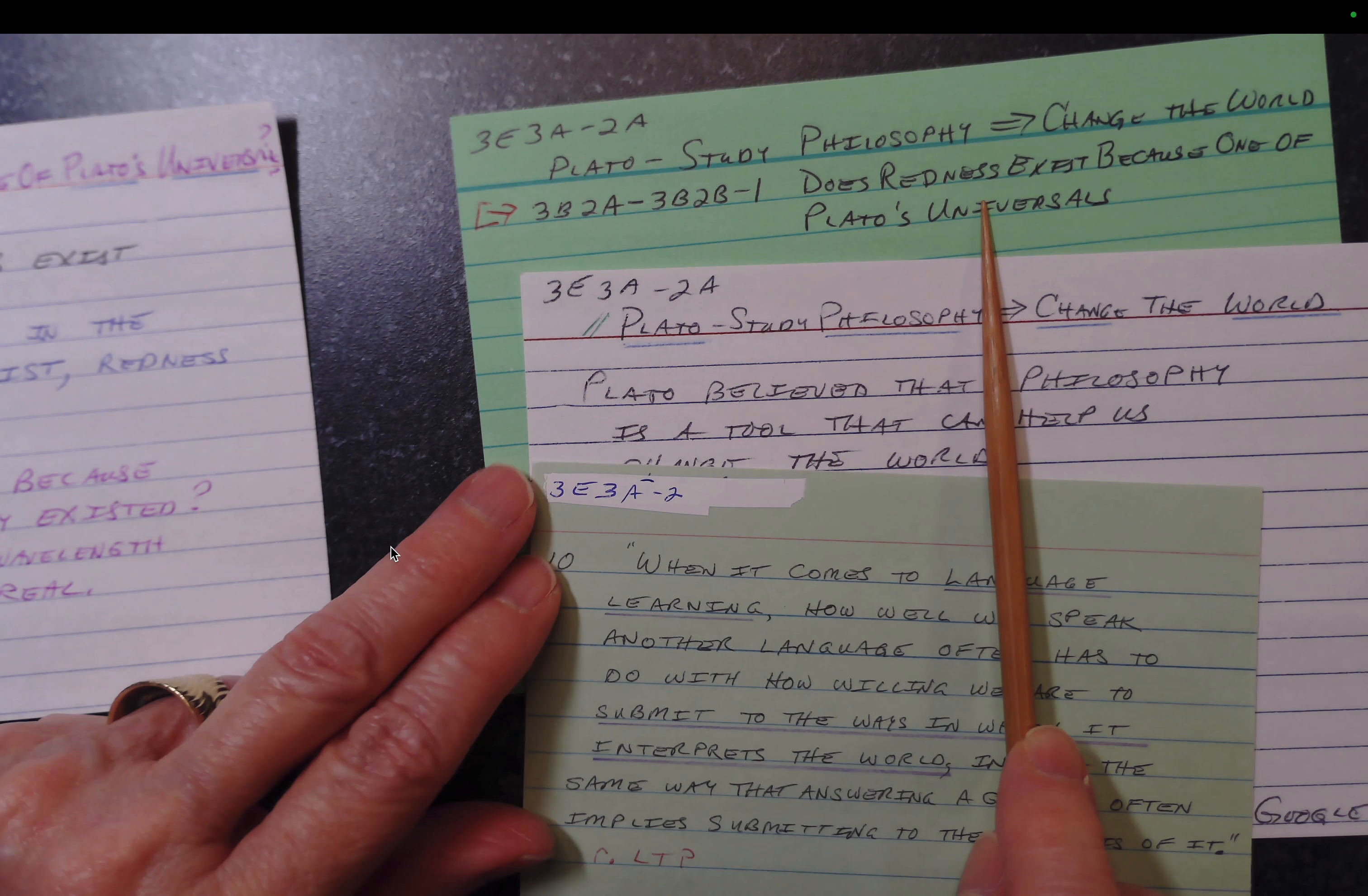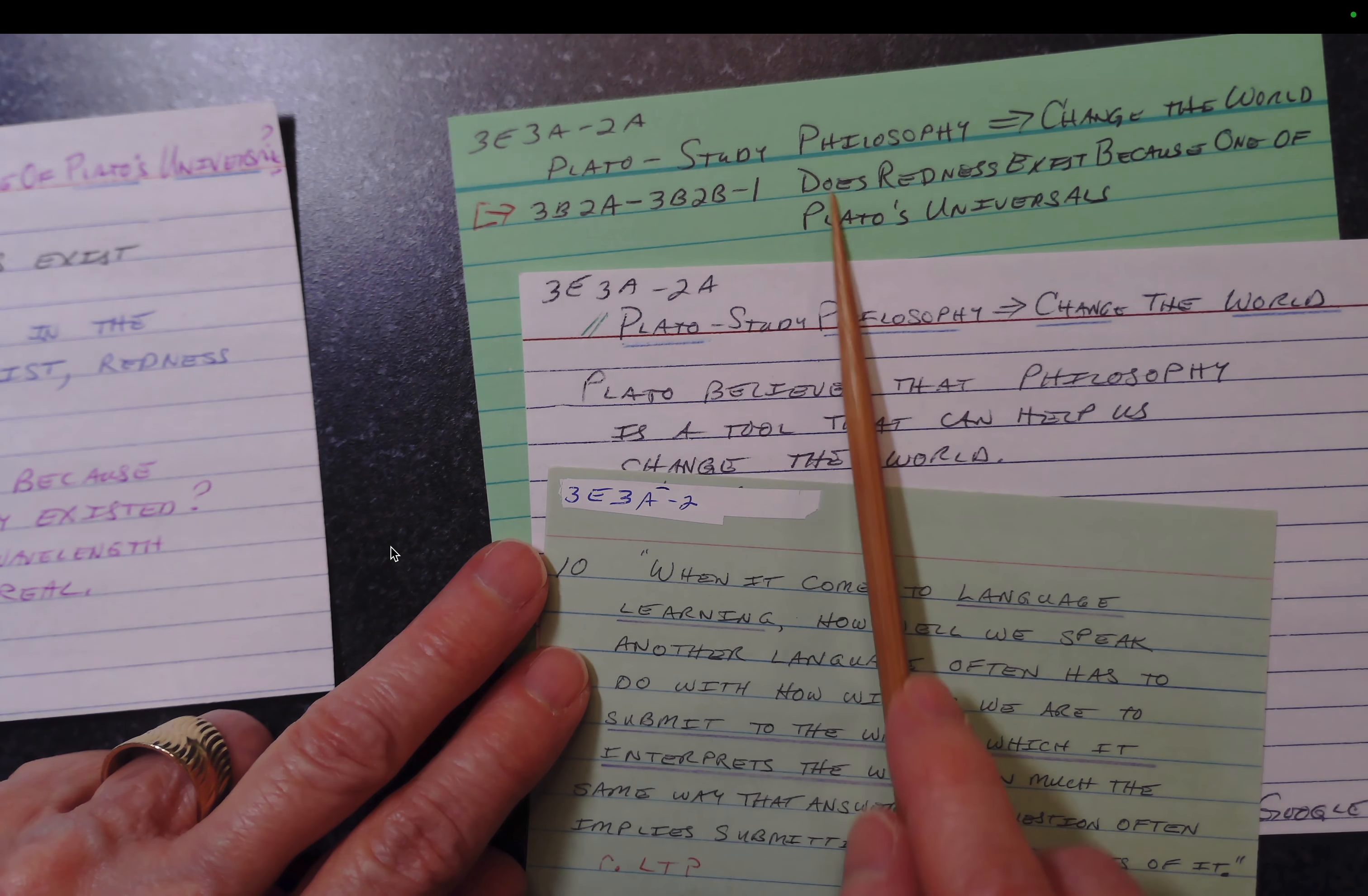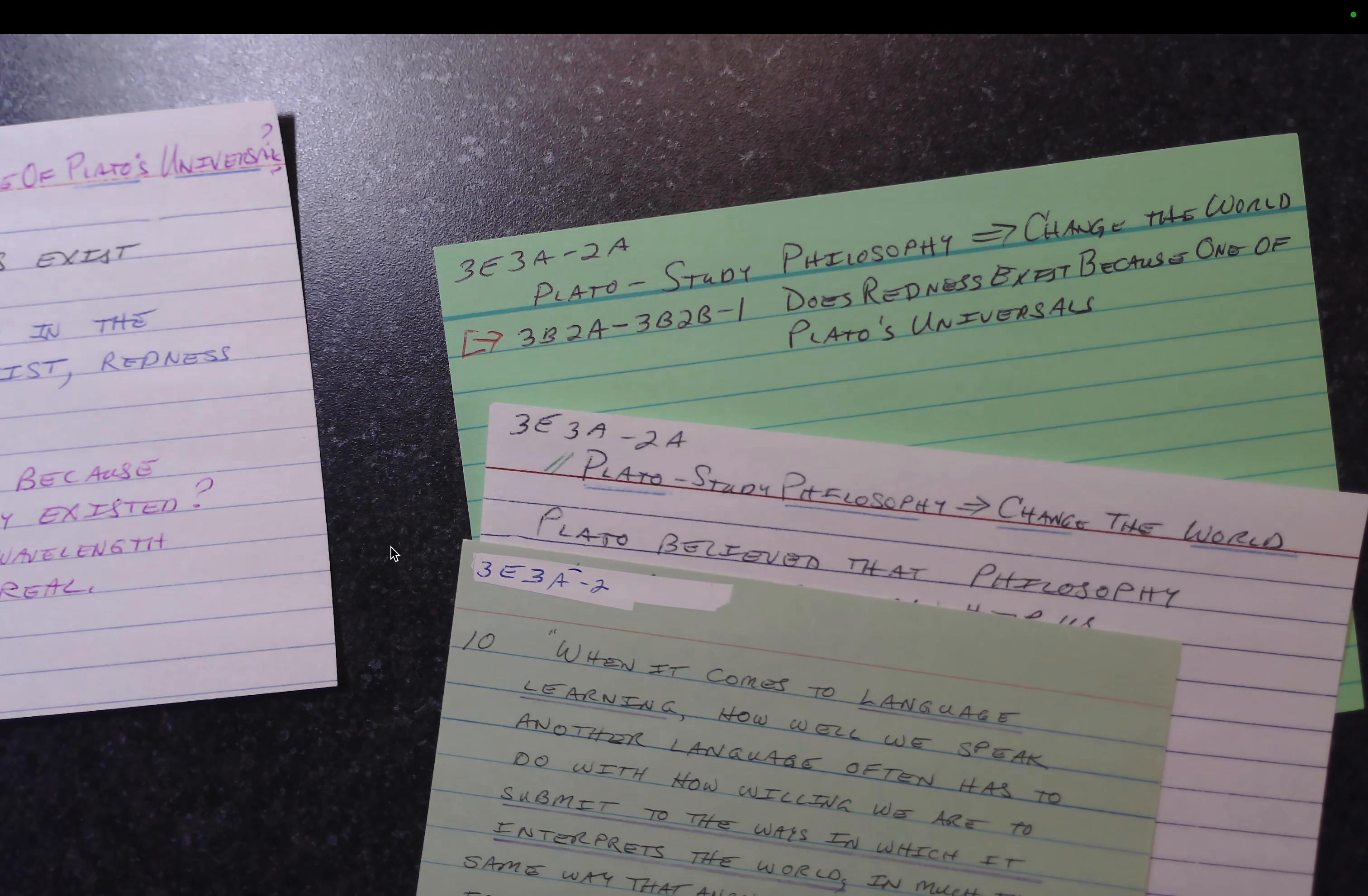And then this card also relates to that card that we put into the system at a time when we didn't have very much about Plato. And so this studying philosophy can change the world ties into just redness exists because it's one of Plato's universals. The tie-in again is a little bit on the weak side. It's just Plato and Plato. But as we learn more about Plato, and this conversation card starts to fill out, this will have a better place. But right now we want to remember that this card could have been the parent for this card. There's another card that I want to show you that came up in my system.